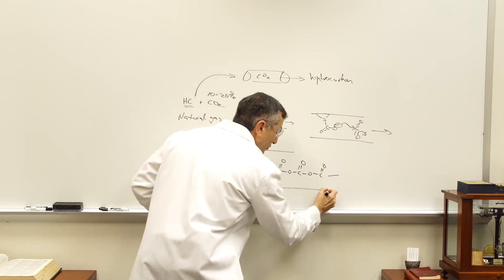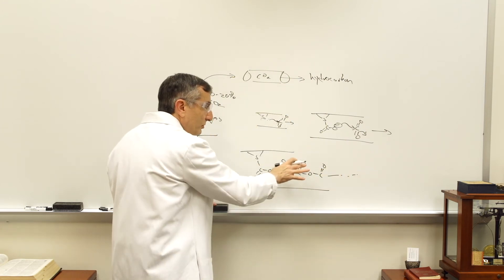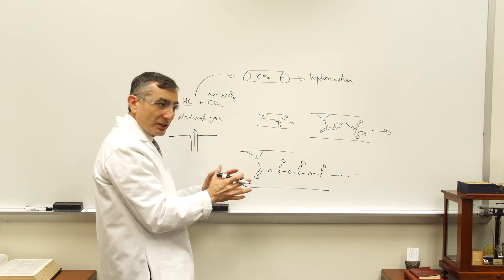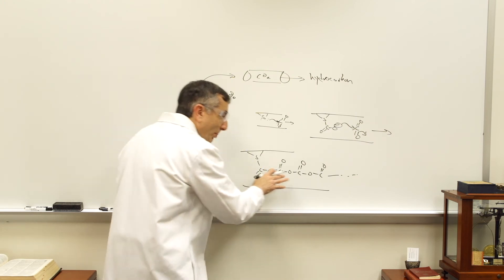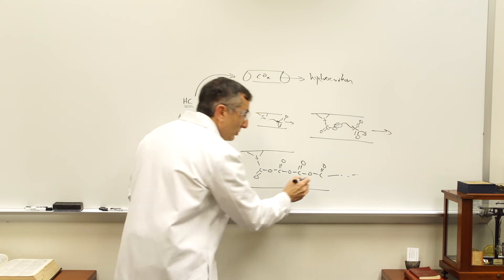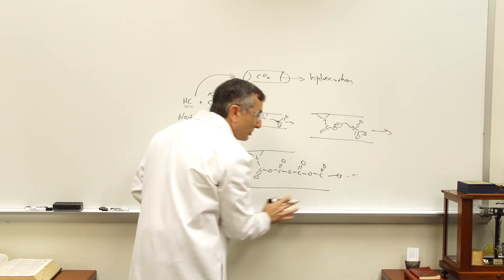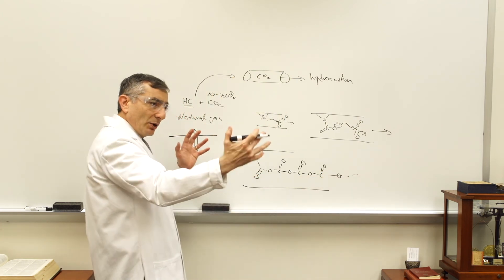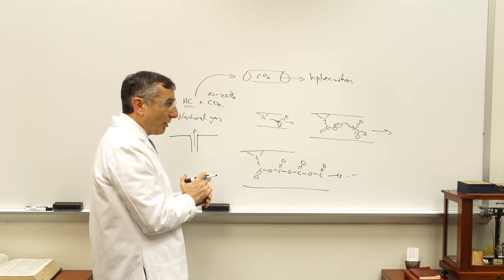So inside this channel you get this polymer of CO2, so you've gone from a gaseous state of CO2 to a polymeric state. And in this polymeric state, we've taken a very large volume and confined it to a small volume.